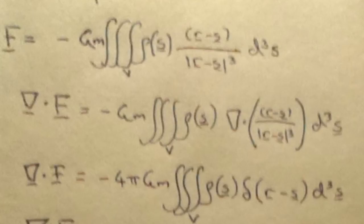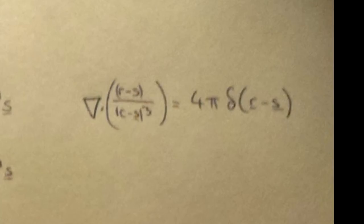Equals minus Gm integral rho of s, the divergence of that thing, integrated over all space. Now the divergence of that thing, if you know your vector calculus relationships, is 4 pi times the Dirac delta function of r minus s.